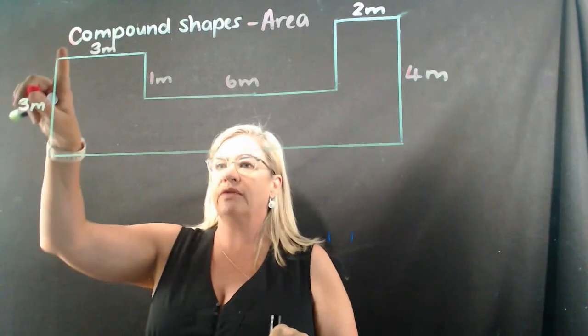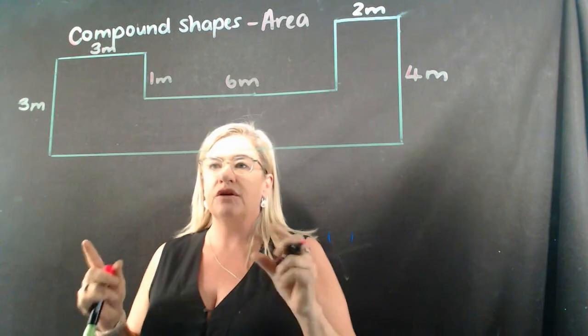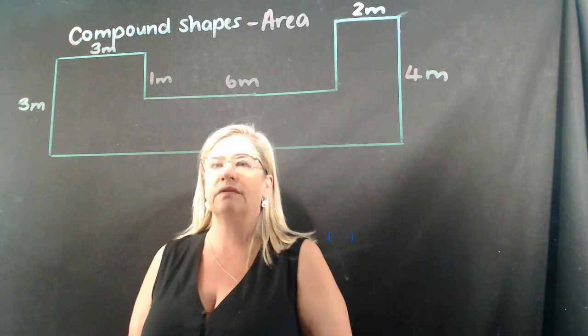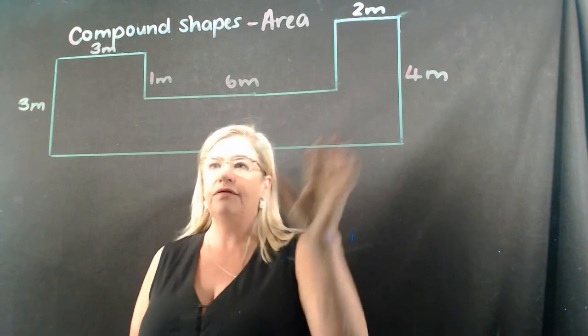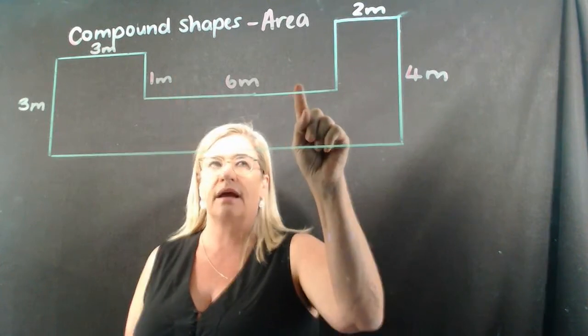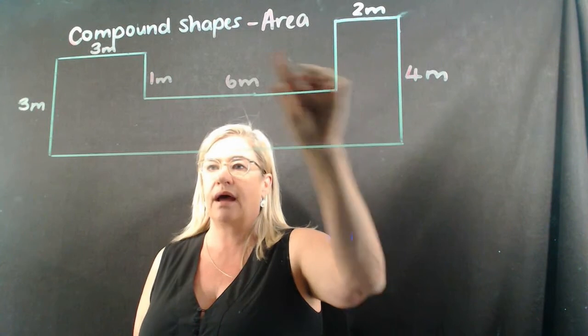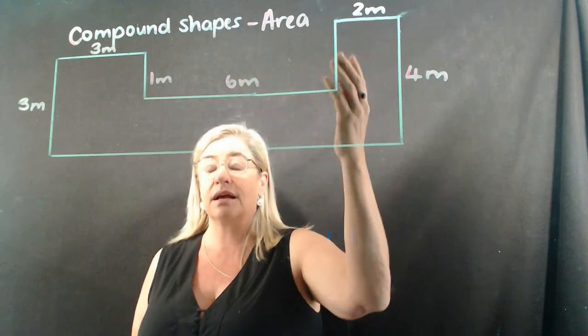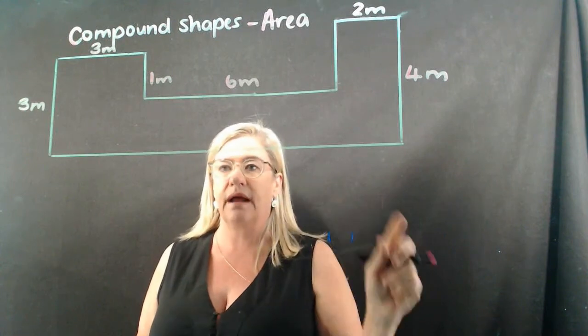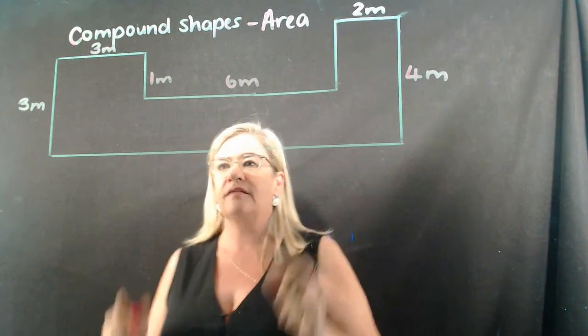So we're going to call these compound shapes because we're trying to find the total of a few areas. So let's have a look at this shape. Now, if this was one big rectangle with just a bite taken out, I could work out the whole area and then work out the bit that's missing and take it away. But today, I'm going to look at three separate areas and then find the total area.